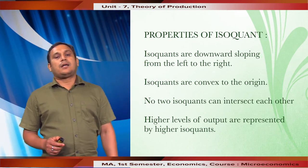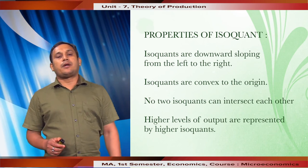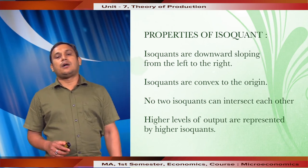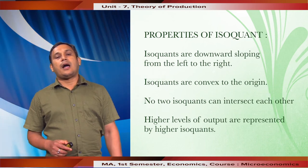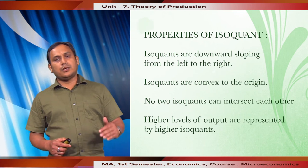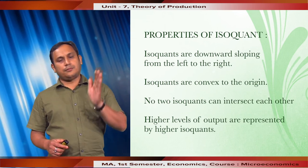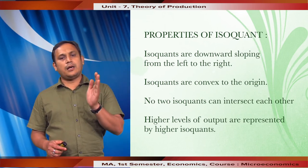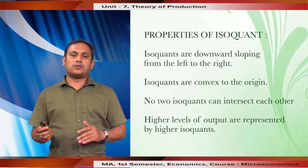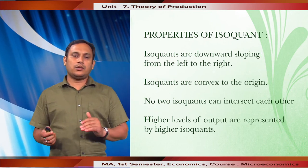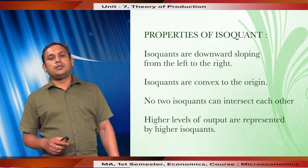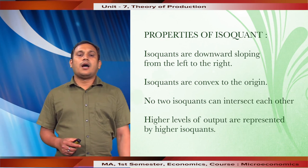Another important property of isoquants is that higher levels of output are represented by higher isoquants. The isoquant which represents a higher level of output is always placed at a higher level compared to the isoquant which represents a lower level of output. This is the fourth property of isoquants.